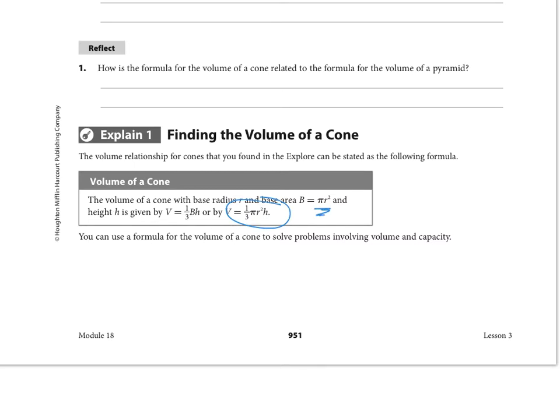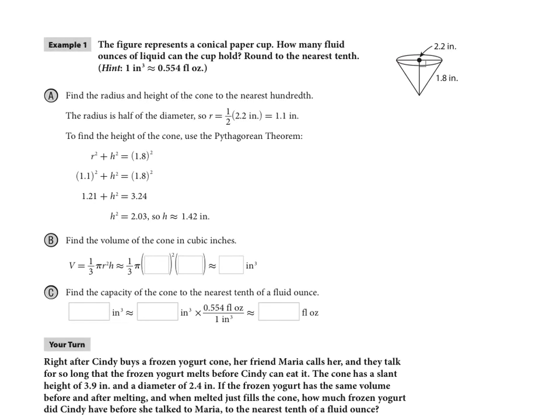The height is always found at a right angle. It's like drilling a hole right through the apex down to the bottom of the cone. Let's look at Example 1 on the next page. This figure represents a conical paper cup. How many fluid ounces of liquid can the cup hold? We're going to round that to the nearest tenth.